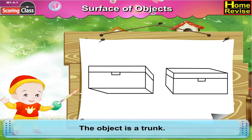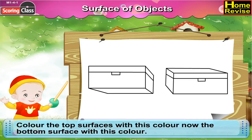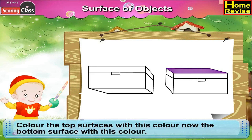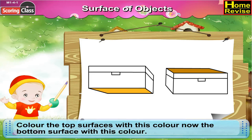Now the next object is the trunk. Let us colour the top surface with this colour. Now the bottom surface with this colour.